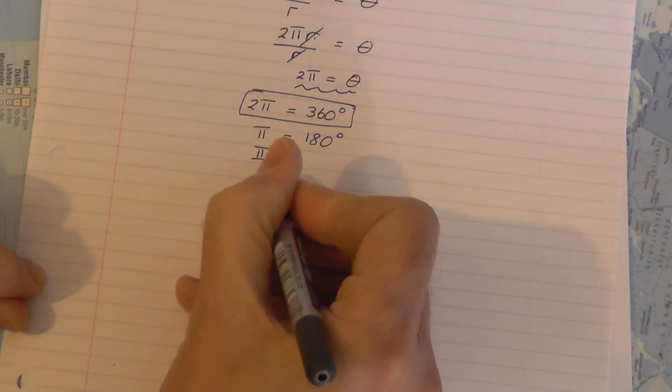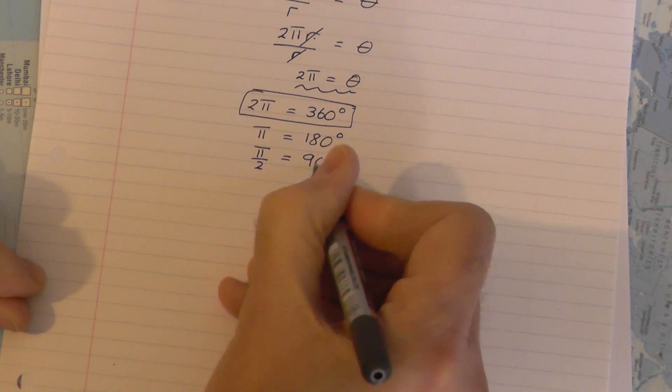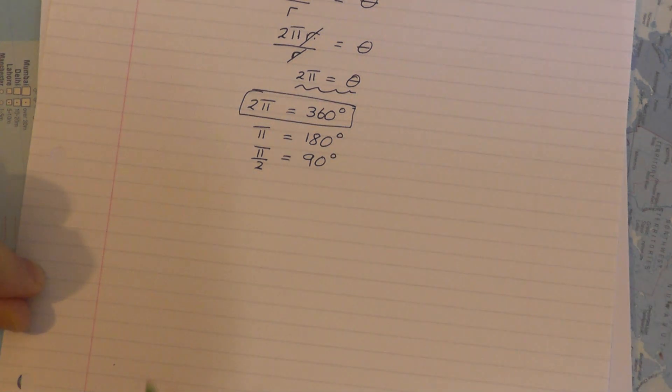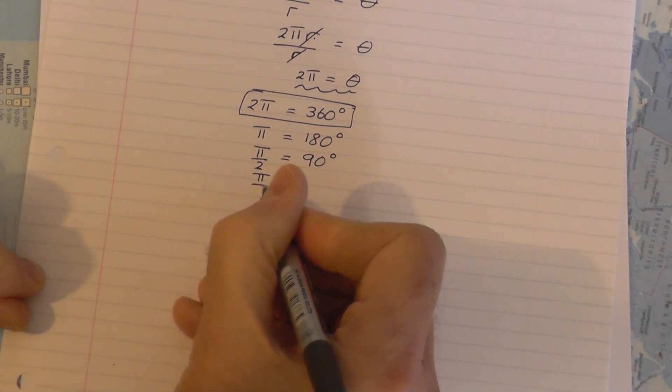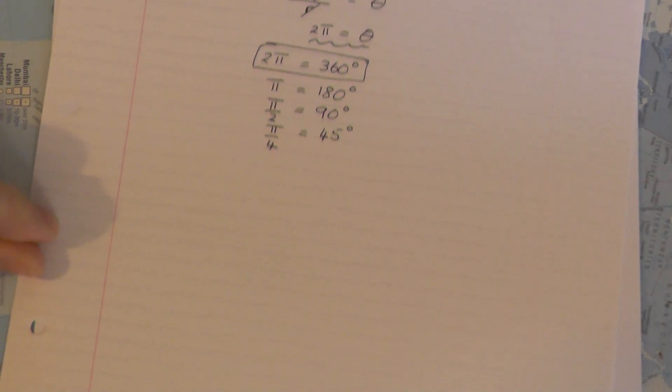Divide by 2 again, π/2 rads or π over 2 rads. Divide by 2, 90 degrees. Divide by 2 again you get a quarter π or π/4, you get 45 degrees if you divide that by 2.